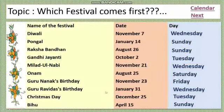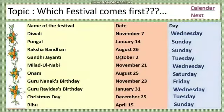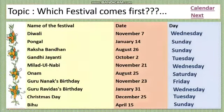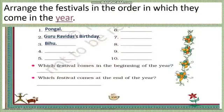May — no festival. June — also none. July — not there either. Then August — yes! Raksha Bandhan on August 26th, and Onam also on August 25th. So 25th or 26th — which comes first? Obviously 25th. So Onam comes first, then Raksha Bandhan.